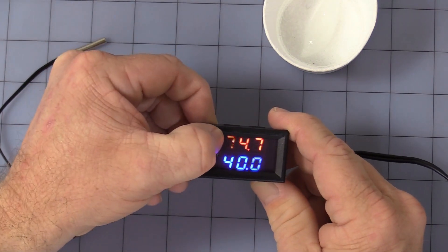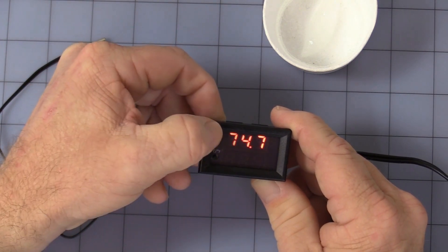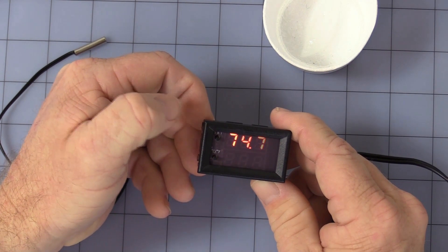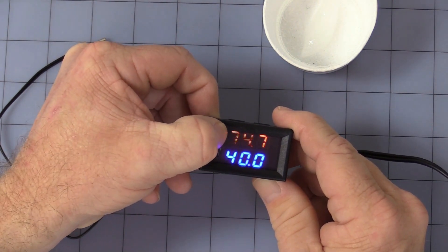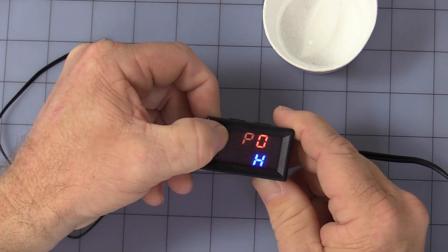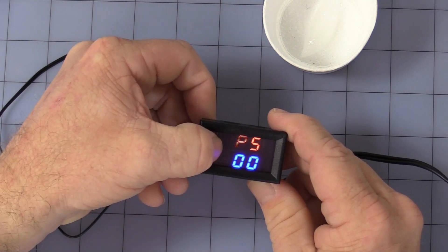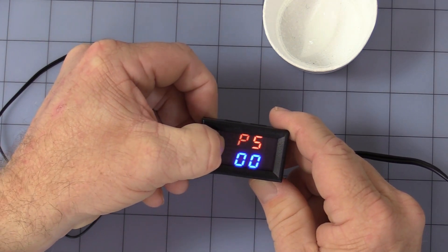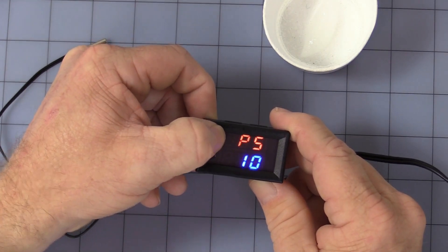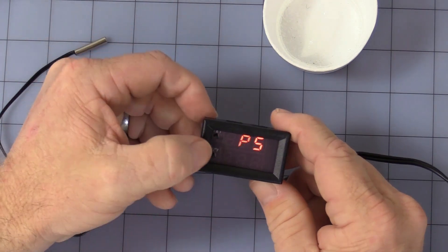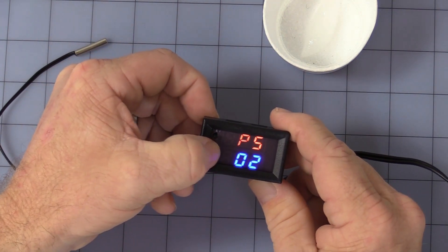Then we have P5, which is a delay turn-on. I've got to hold it long enough. P5 will give you up to a 10-second delay. Simply hold both buttons, then you see flashing, and you can adjust it up to 10 seconds. But it comes factory set at zero.